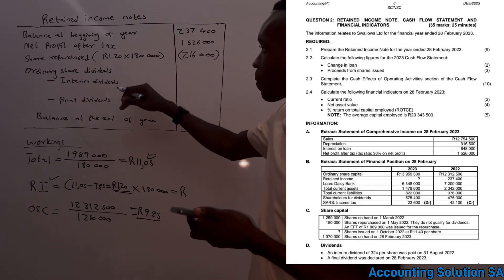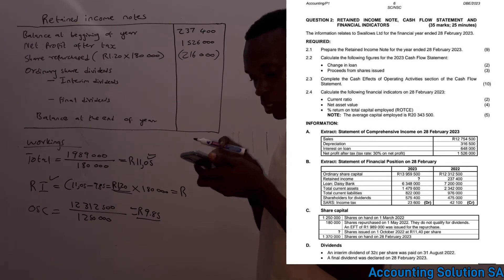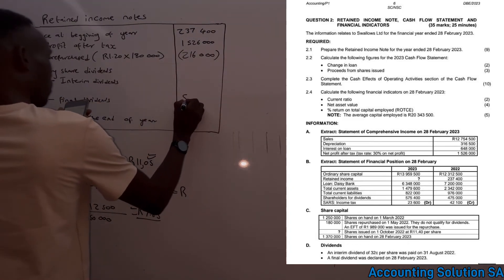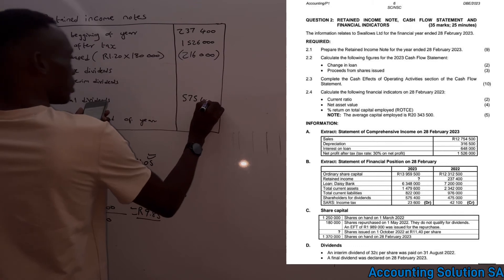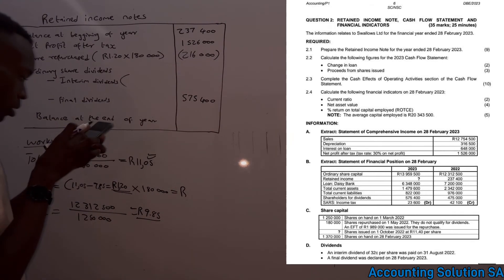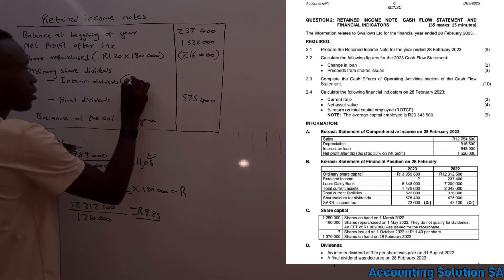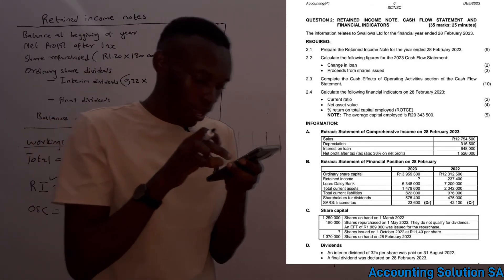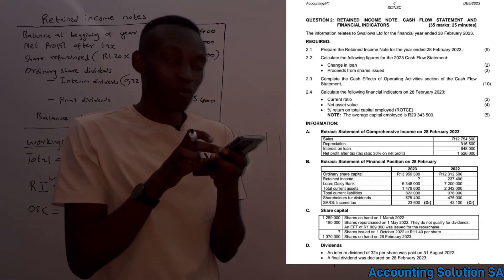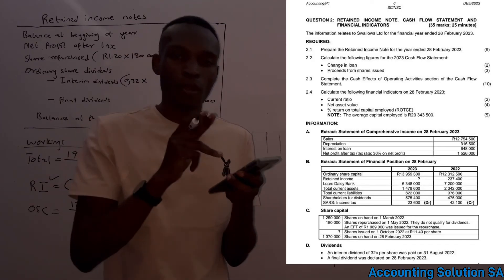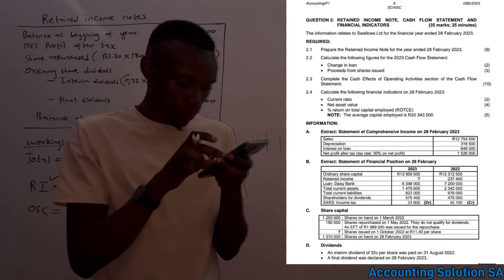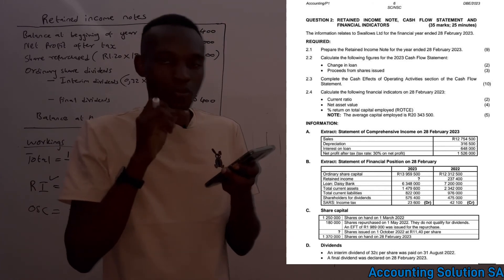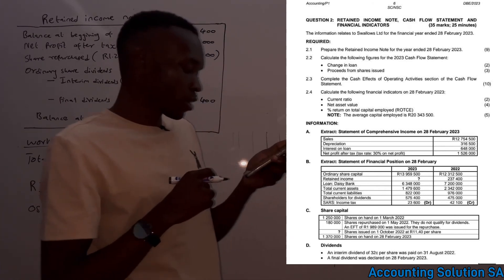Now let's finish up dividends. Starting with final dividends: these are already recorded under the balance sheet as shareholders for dividends, which is R575,400. For interim dividends, the rate was 32 cents (R0.32) per share, and we need to multiply by the qualifying shares. At the beginning we had 1,250,000 shares, and during the year 180,000 shares were bought back on 1 May 2022 and do not qualify for dividends, so we subtract them.